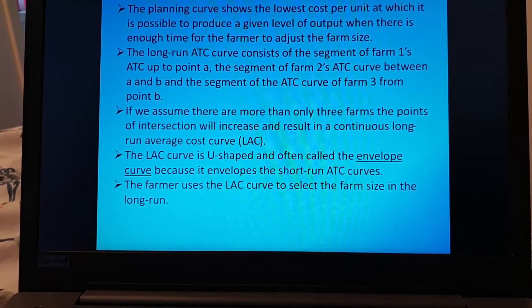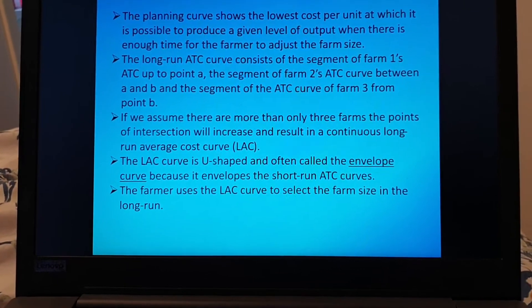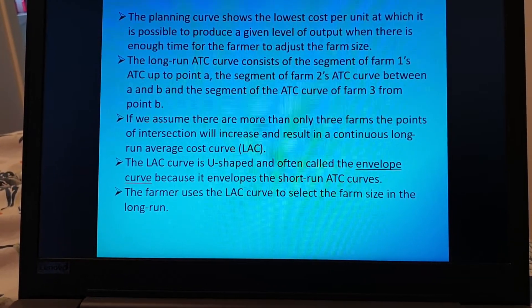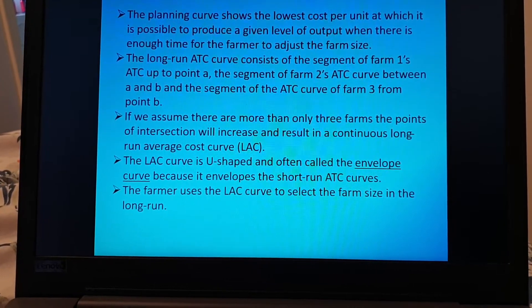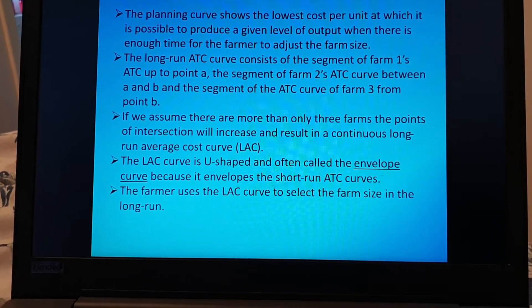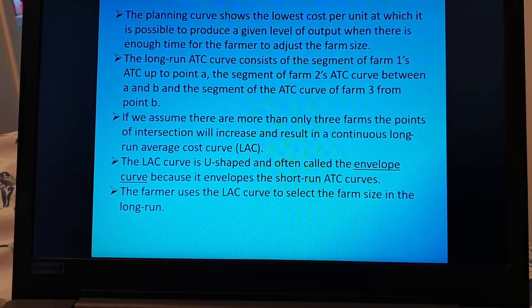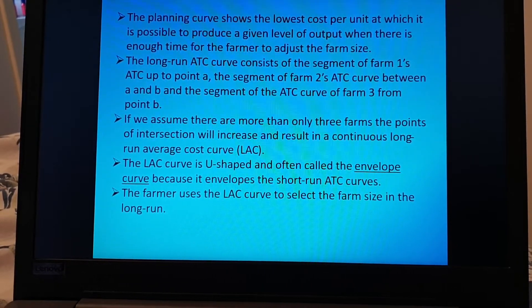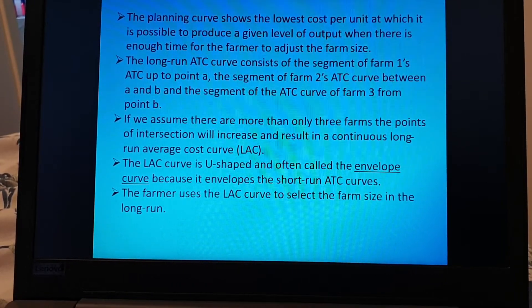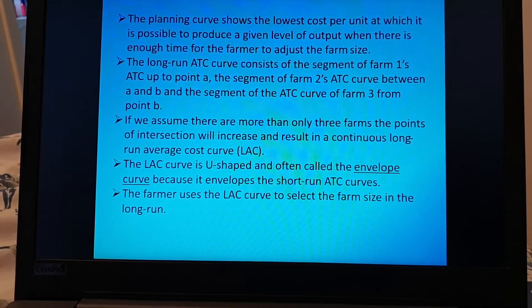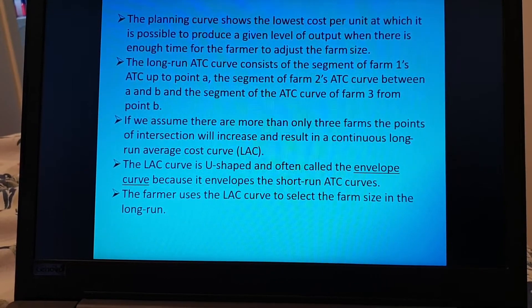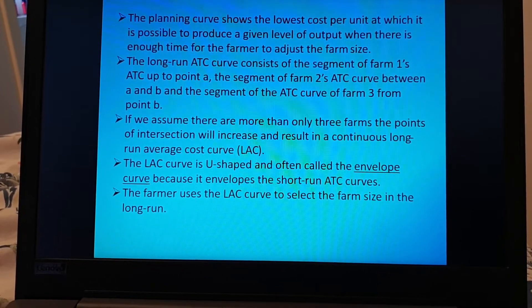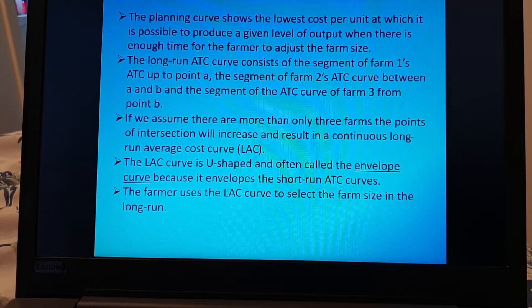The planning curve. The planning curve shows the lowest cost per unit at which it's possible to produce a given level of output when there is enough time for the farmer to adjust the farm size. The long run ATC curve. The long run ATC curve consists of the segment of farm 1 ATC up to point A, the segment of farm 2 ATC curve between A and B and the segment of ATC curve of farm 3 from point B.